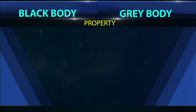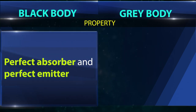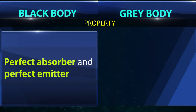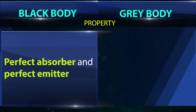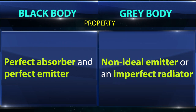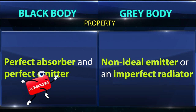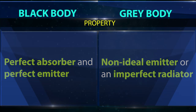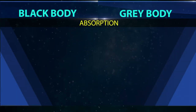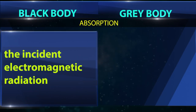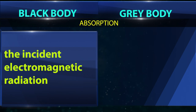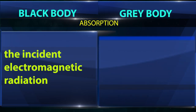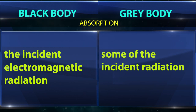Property — black body: a black body is a perfect absorber and perfect emitter. Property — gray body: a gray body is a non-ideal emitter or an imperfect radiator. Absorption — black body: can absorb all the incident electromagnetic radiation. Absorption — gray body: can absorb only some of the incident radiation.